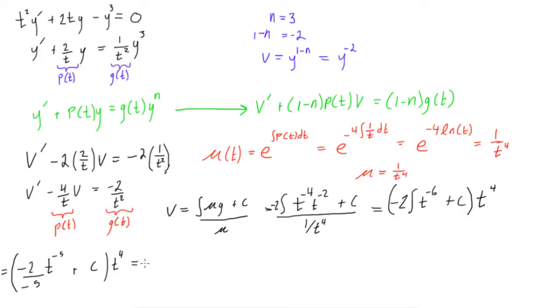So, we can distribute this through. This will become 2 fifths t to the negative 5 times t to the power of 4 plus c times t to the power of 4. It's okay, guys, we're almost there. So, we get, this reduces to 2 over 5t plus c times t to the fourth. Okay. And this is all equal to v, remember, right? We need to write that as a v. So, we're just going to circle this so you can see it.